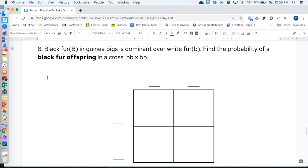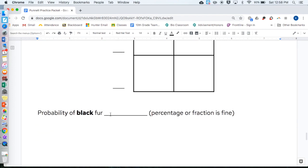Number eight. Black fur, capital B, in guinea pigs is dominant over white fur, lowercase b. Find the probability of a black fur offspring in a cross, lowercase b, lowercase b, times lowercase b, lowercase b. The probability of black fur goes on the line.